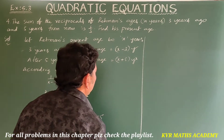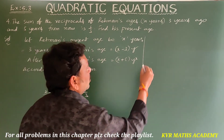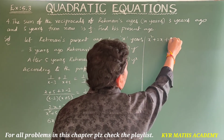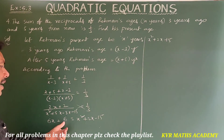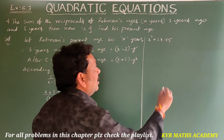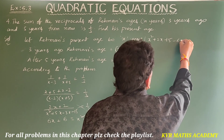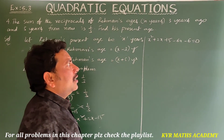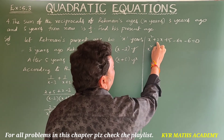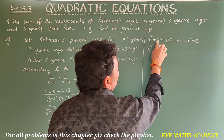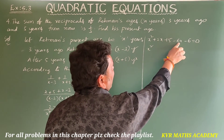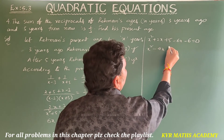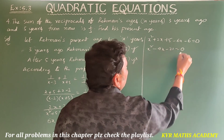Rearranging: x squared plus 2x minus 15 minus 6x minus 6 equals 0, giving x squared minus 4x minus 21 equals 0. To factorize, we need factors of 21 that differ by 4: 7 and 3 work since 7 minus 3 equals 4. So the equation becomes x squared minus 7x plus 3x minus 21 equals 0.